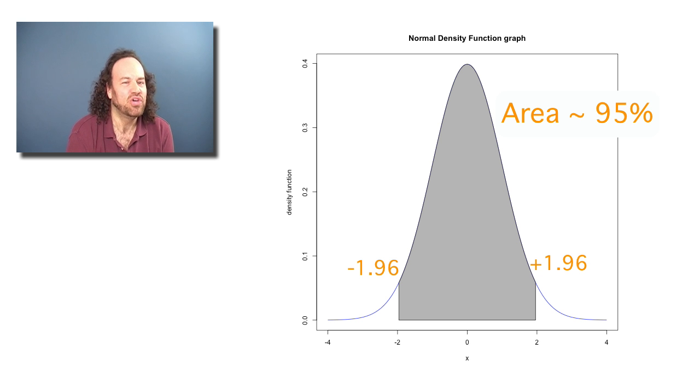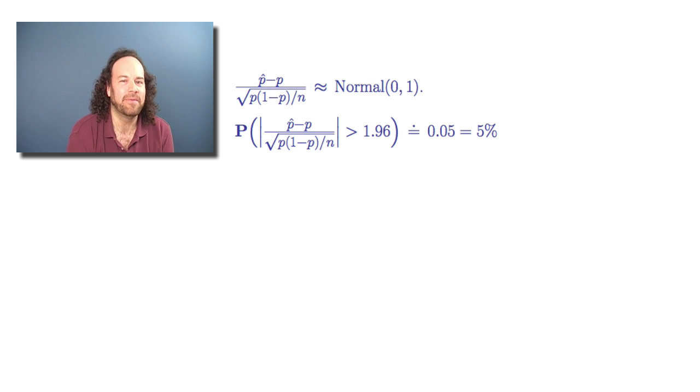So it means usually, if you have a normal distribution, you'll be between minus 1.96 and plus 1.96, which means that only 5% of the time will you be farther away than that. So in other words, the probability that this quantity which has approximately a standard normal distribution will be more than 1.96 is approximately equal to 5% or equal to 0.05.